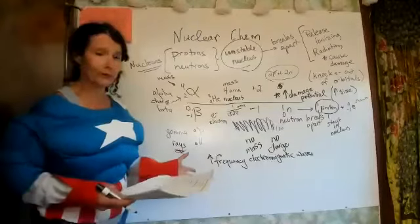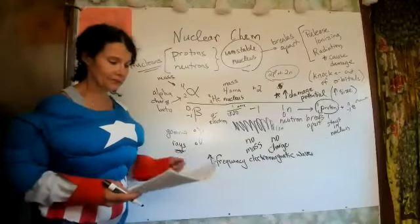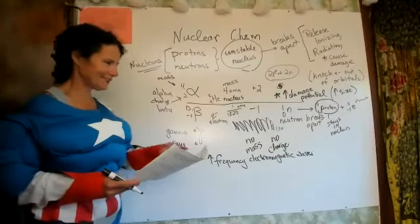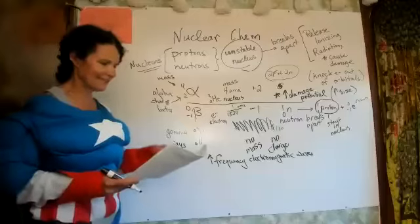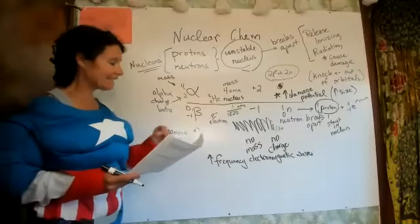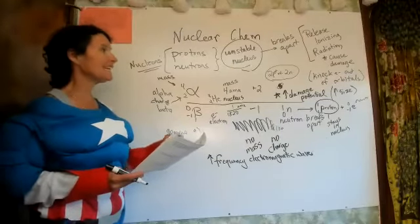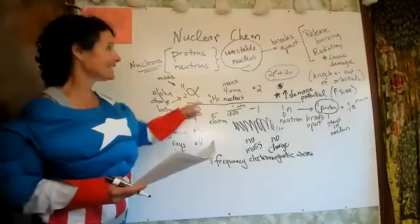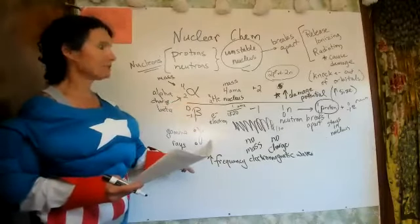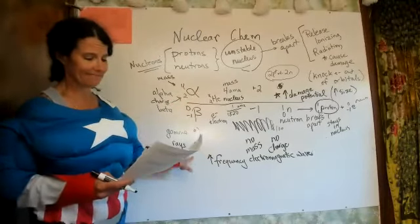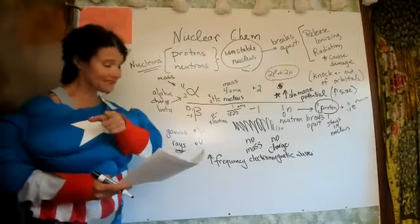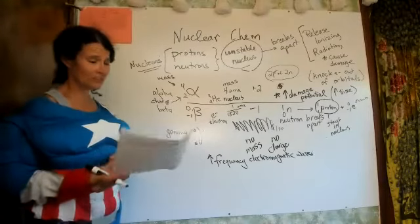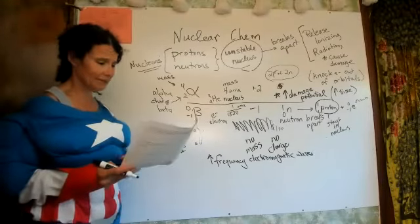There is no alternative symbol for gamma. It's just high-frequency electromagnetic waves, high enough frequency to cause damage. It comes from unstable nuclei, and that's what Bruce Banner was playing with — and he became the Hulk.